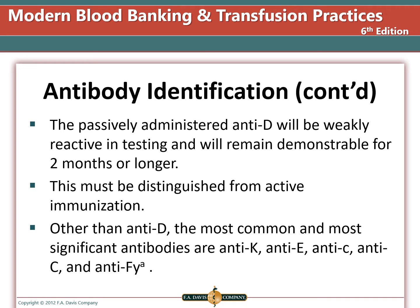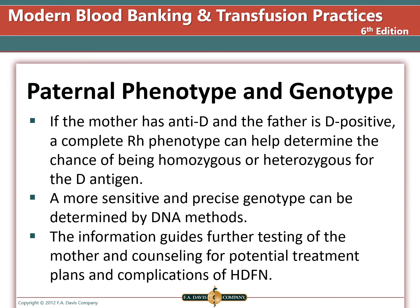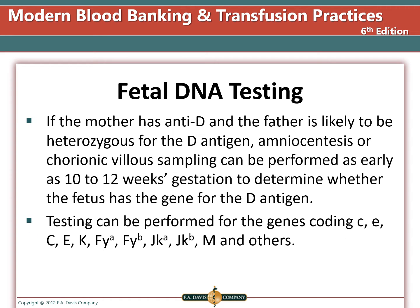Other than anti-D, the most common and clinically significant antibodies are anti-K (big K), anti-c (little c), anti-C (big C), and anti-Duffy A. If the mother has anti-D and the father is D positive, a complete Rh phenotype can help determine if he is homozygous or heterozygous for D, indicating the chance of the infant inheriting the antigen. Since paternity is not always certain, genetic testing or genotyping of the fetus is preferred. DNA testing via amniocentesis or chorionic villus sampling can be performed as early as 10–12 weeks gestation to determine if the fetus has the relevant antigen.